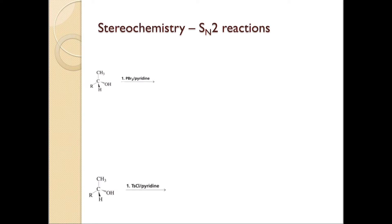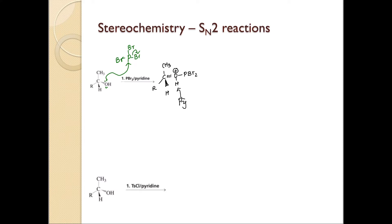Now let's see this reaction — the reaction of the alcohol with PBr3. The first step is that the alcohol is going to be converted into a good leaving group. The alcohol, with its lone pair of electrons, is going to attack the phosphorus, and then the bromine is going to leave. Remember, you still have the hydrogen, and the PBr2 is attached and the oxygen is going to be positively charged. Then pyridine goes and abstracts this hydrogen, neutralizing the positive charge on the oxygen.